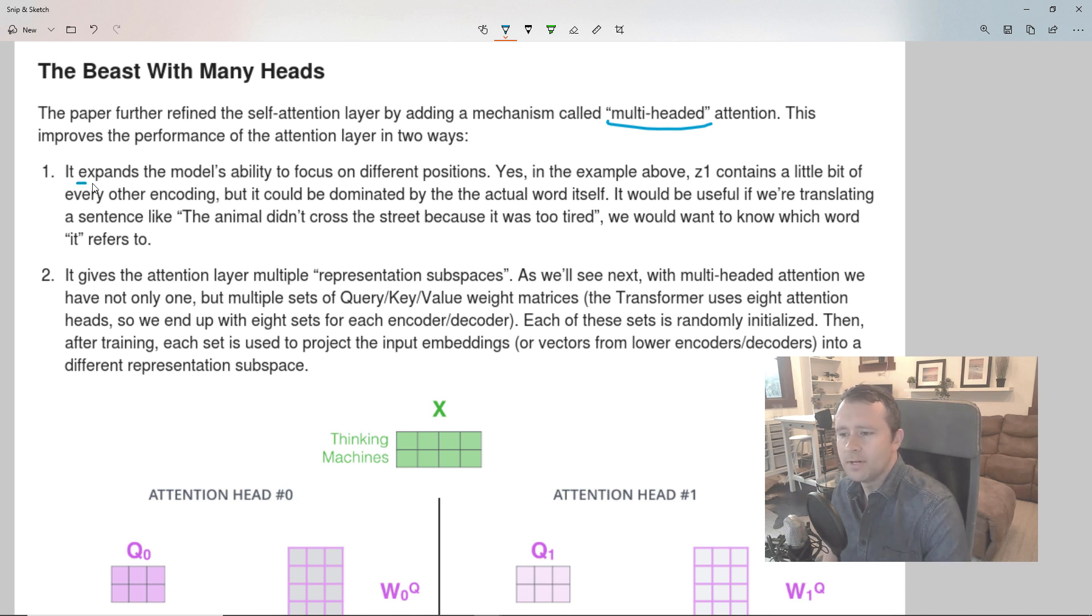Number one, it expands the model's ability to focus on different positions. Yes, in the example above Z1, Z1 is the output of the self-attention mechanism, contains a little bit of every other encoding. So remember, what we do is we, for a given input word, we score every word in the sentence, and then we use those scores as weights for taking a weighted sum of all the value vectors to produce the embedding, or the Z vector rather, for that input word.